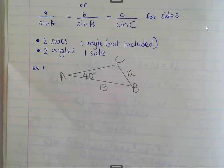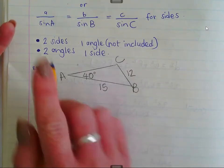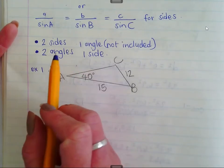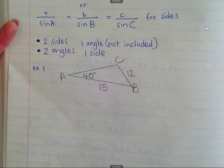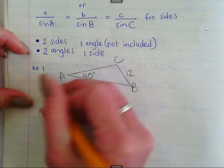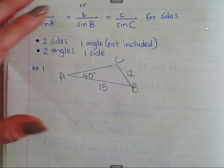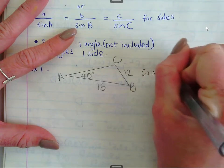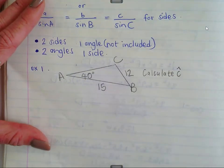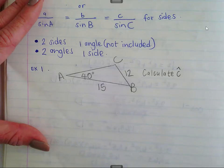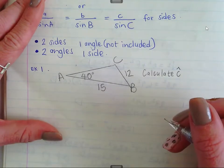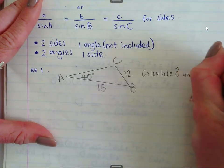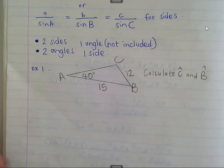When you look at this example, you can see that you have two sides and one angle, and the angle is not included. That is what you need in order to use the sine rule - two sides and one angle, but the angle must not be included. I'm going to show you now why the angle should not be included. We have to calculate angle C and B. Because we're calculating an angle, we put the function at the top.